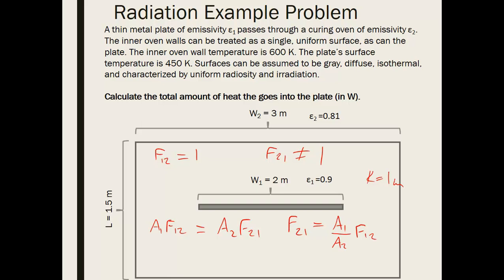So now when we quantify these areas, so area one is going to be, we're told that this is a thin metal plate, so we're going to neglect this tiny little surface on each end. That's what that thin assumption tells us.